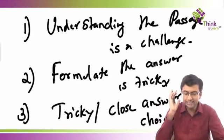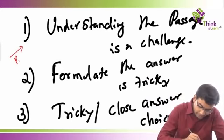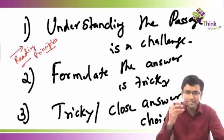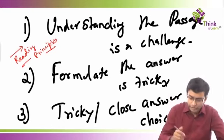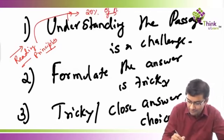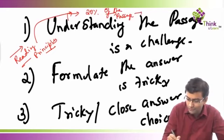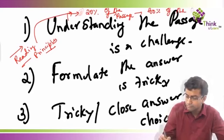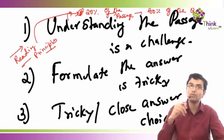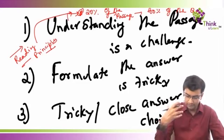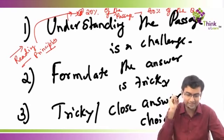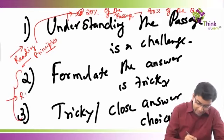Understanding the passage is a challenge — that is why we have the reading principles class. The reading principles class helps you understand the passage and figure out what is really important while answering questions. The objective was to pick up that 20% of the passage which will help us answer 80% of the questions. Now that we know this 20% will help answer 80% of the questions, we need to formulate the answer and figure out how to pick the right answer choice when stuck between two options. To achieve these two goals is what the RC rules class is for.